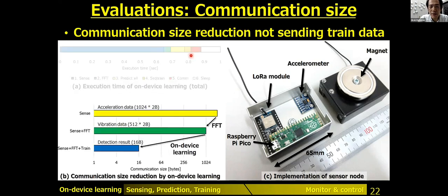A benefit of on-device learning is communication size reduction. If the edge device handles sensing only, raw acceleration data is transmitted — about two kilobytes. If it handles sensing and FFT, the frequency spectrum is transmitted — about one kilobyte. With on-device learning, only the prediction result is transmitted — 16 bytes. Training at the server is not needed. So low-power LoRa is sufficient, reducing communication energy consumption, which is very important for battery-powered wireless sensor nodes.